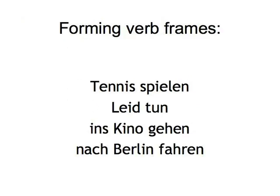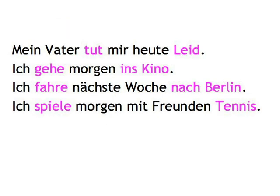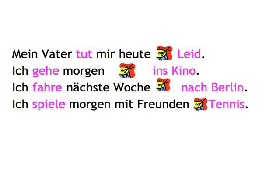Let's go back to our verbal brackets or frames now and have a look at other cases where we have more than one part in the verb phrase. A lot of verbs are used together with nouns or adverbial phrases to form standard expressions like 'Tennis spielen,' 'leid tun,' 'ins Kino gehen,' 'nach Berlin fahren.' When you make a sentence using these verbs, again the verb phrase forms the frame: 'Mein Vater tut mir heute leid,' 'Ich gehe morgen ins Kino,' 'Ich fahre nächste Woche nach Berlin,' 'Ich spiele morgen mit Freundin Tennis.' We imagine the sentence as a drum roll that builds up to ta-da — the information that completes the idea of the verb. Without 'leid,' 'ins Kino,' 'nach Berlin,' and 'Tennis,' the information about what's being done is incomplete. We often only really know at the very end what the sentence is actually about.